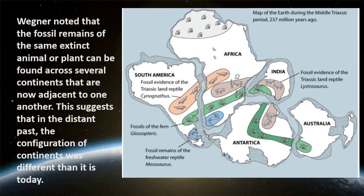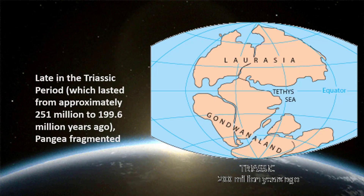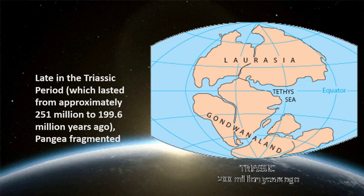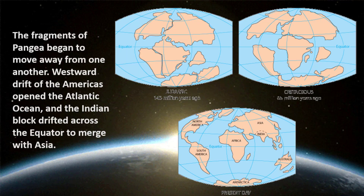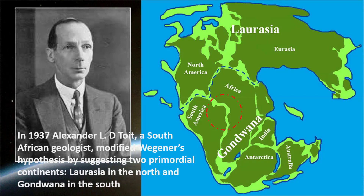Wegener postulated that throughout most of geologic time there was only one continent, which he called Pangea. Late in the Triassic period, which lasted from approximately 251 million to 199.6 million years ago, Pangea fragmented. The fragments began to move away from one another; westward drift of the Americas opened the Atlantic Ocean, and the Indian block drifted across the equator to merge with Asia. In 1937, Alexander du Toit, a South African geologist, modified Wegener's hypothesis by suggesting two primordial continents — Laurasia in the north and Gondwana in the south.